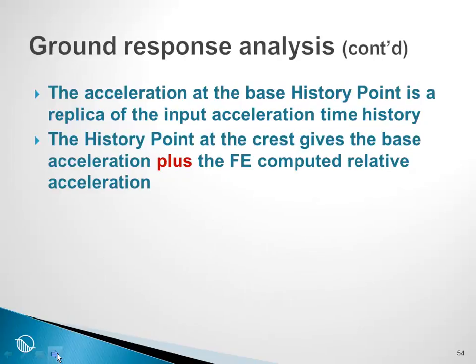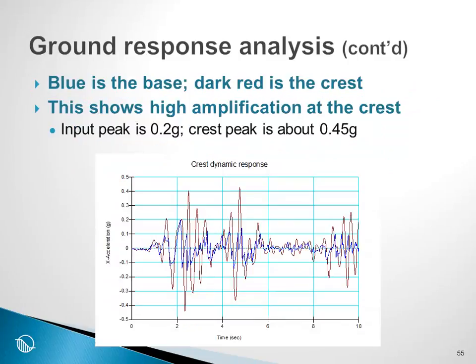Recall that the acceleration at the base history point is a replica of the input acceleration time history. The history point at the crest gives the base acceleration plus the finite element computed relative accelerations. In this particular case, the blue is the base and the dark red is the crest. This shows high amplification at the crest. The input peak is 0.2g, the crest peak is about 0.45g.